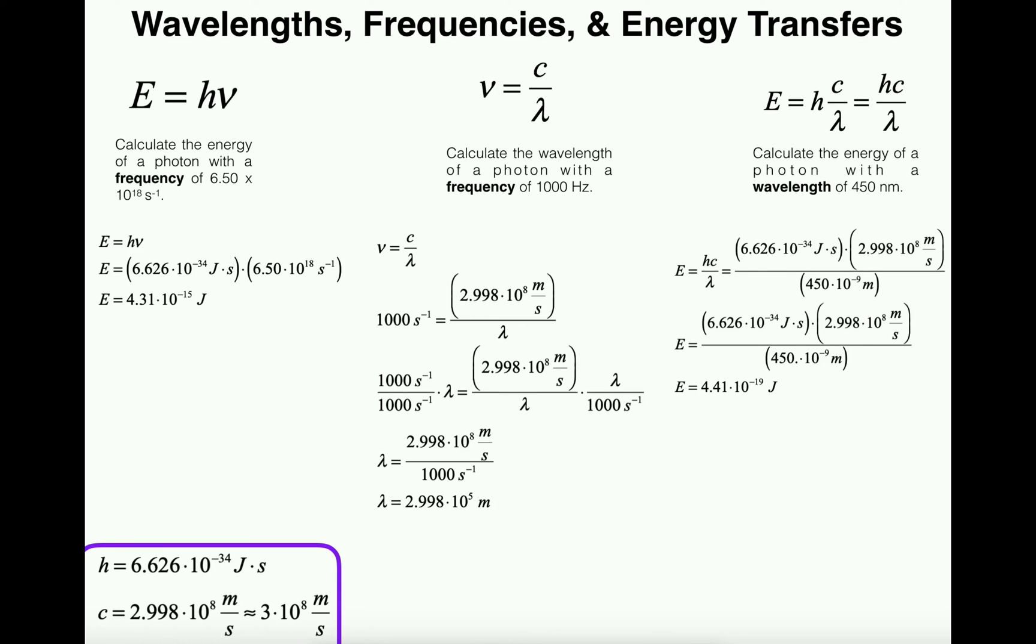If I had 7000 nanometers, then this would be 7000 × 10⁻⁹ meters. In any case, once I multiply or divide all this out I get that the energy of this photon is 4.41 × 10⁻¹⁹ joules.